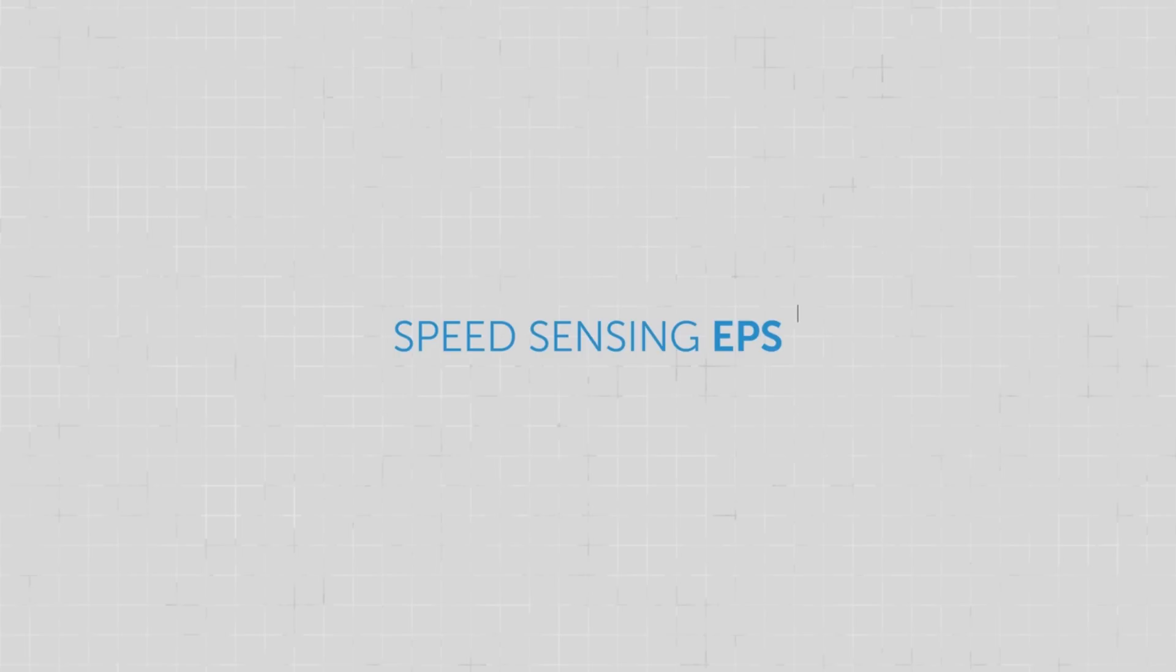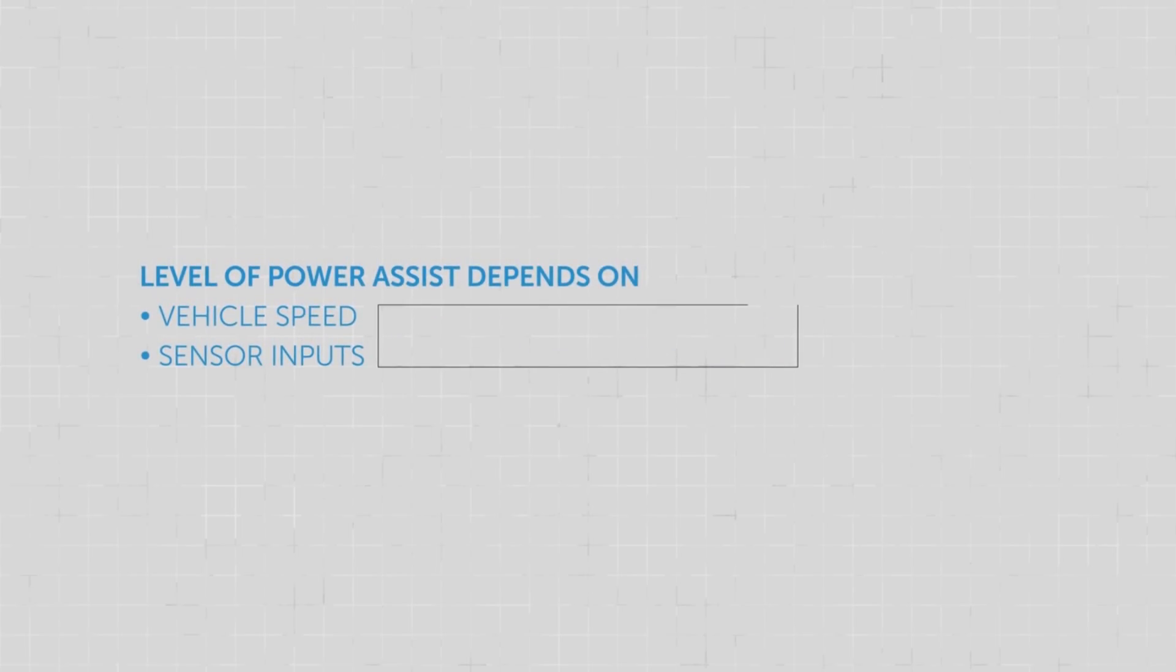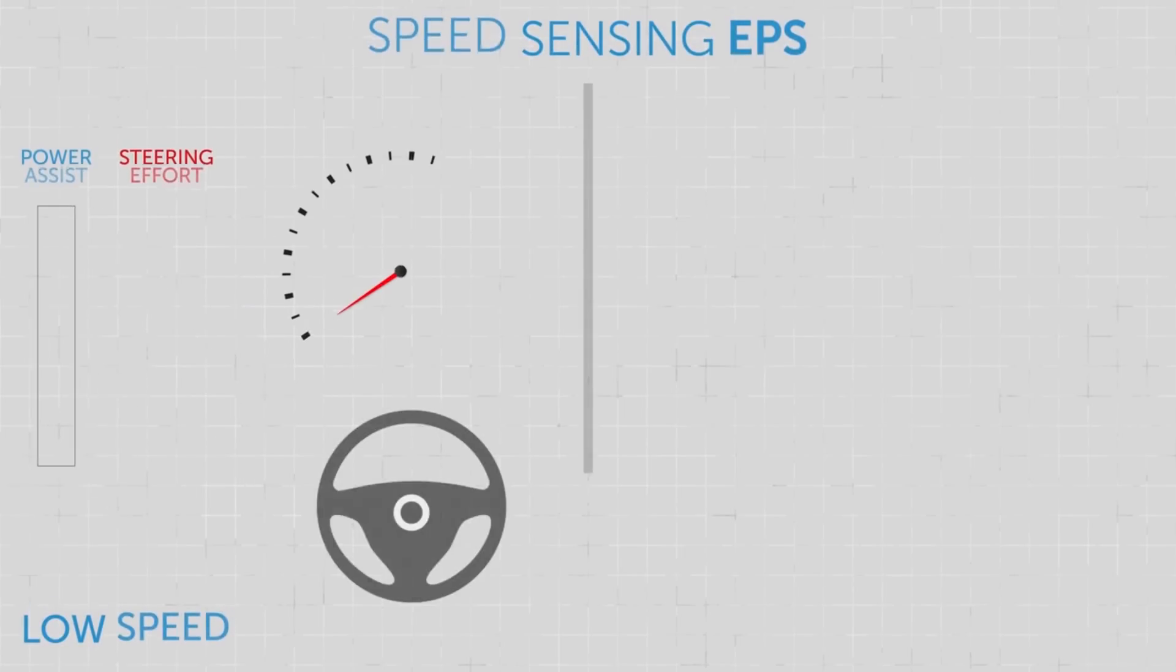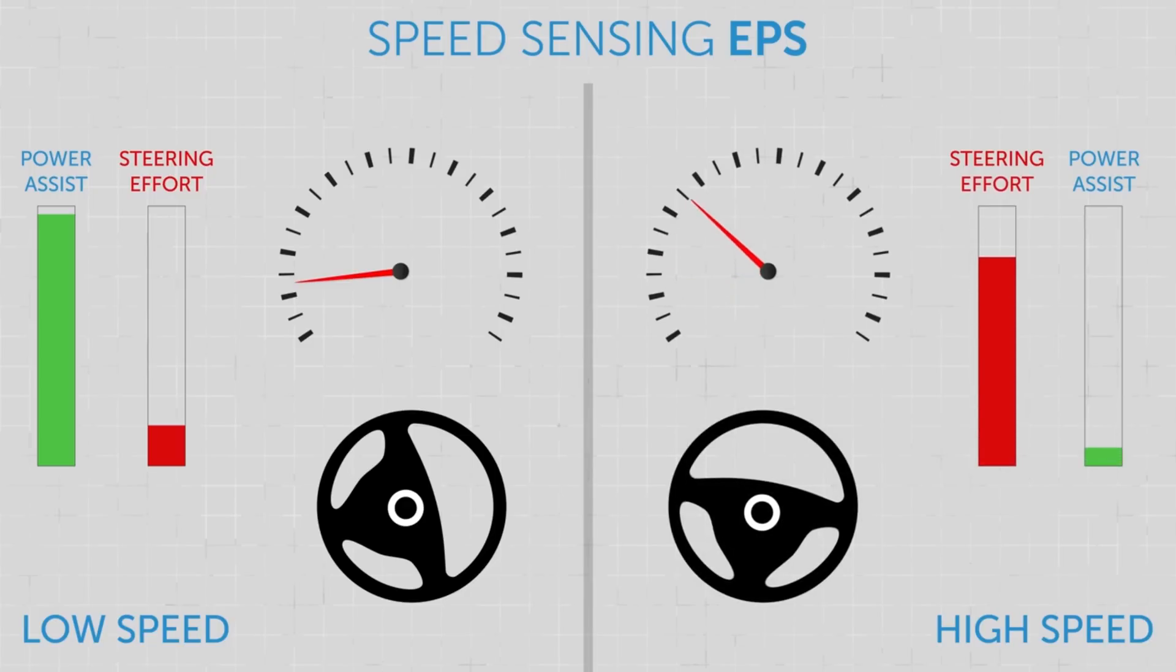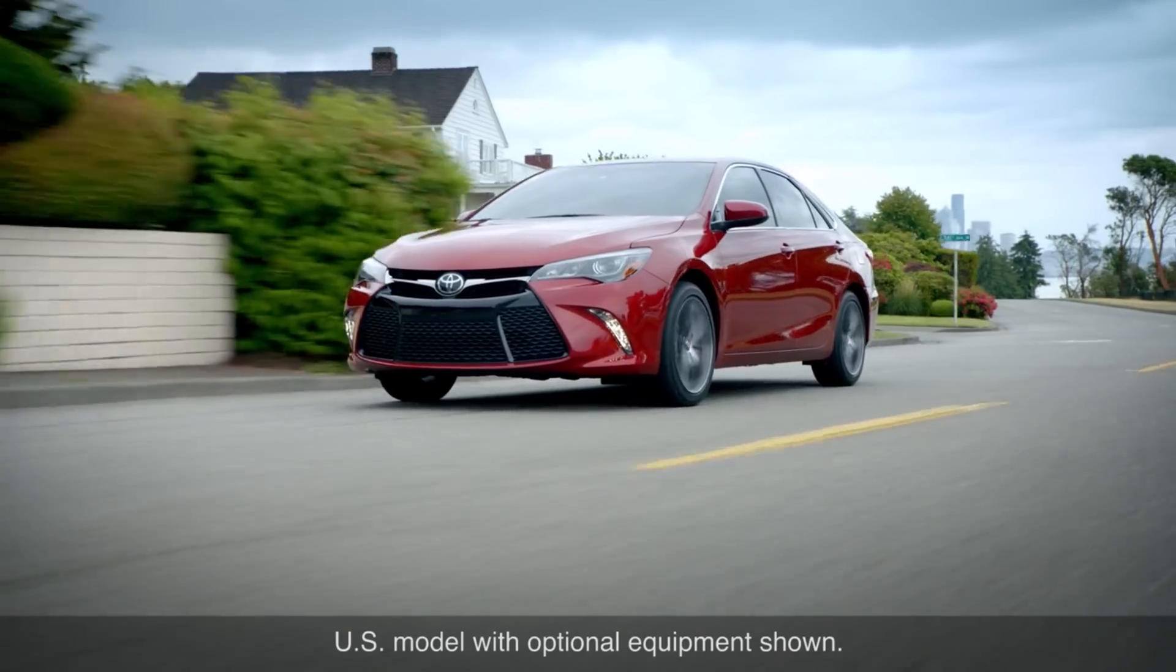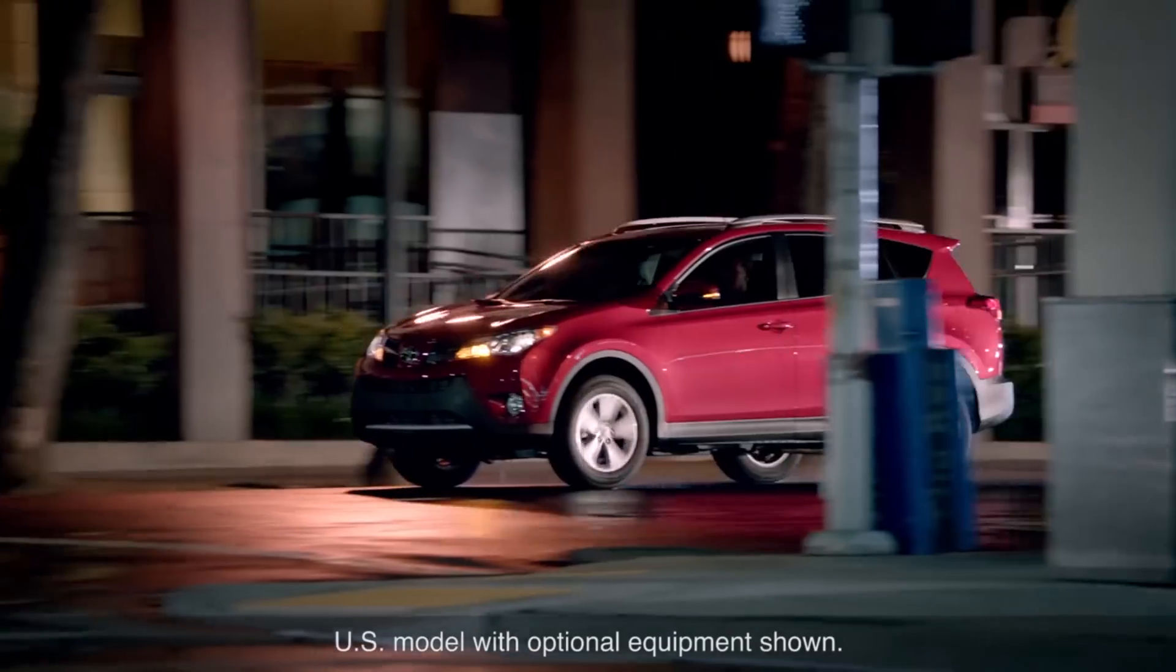Many Toyota models are equipped with vehicle speed sensing EPS. The level of power assist it delivers is varied according to vehicle speed and other sensor inputs. In general, EPS provides more assist for a light steering effort and response at low speeds, less assist for more moderate levels of effort and feel at higher speeds. The precise steering assist characteristics have been optimized based on all those inputs to help ensure handling stability.